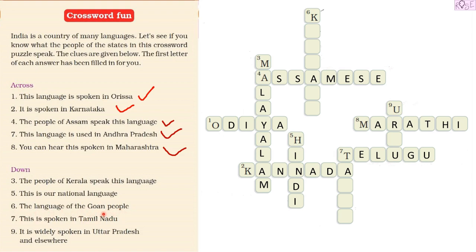Down number six — the language of the Goan people, those who live in Goa. It starts with K and has an A in between. The language is Konkani. We write K, O, N, K, A, N, I — Konkani, the language spoken by the people of Goa.